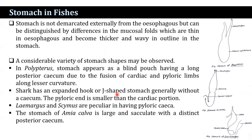In fishes, the stomach is highly varied. It is not demarcated externally from the esophagus, but can be distinguished by differences in the mucous folds, which are thin in the esophagus but become thicker and wavy in the stomach. In Polypterus, the stomach appears as a blind pouch with a long posterior cecum due to the fusion of the cardiac and pyloric limbs along the lesser curvature. Sharks have an expanded hook-like J-shaped stomach, generally without a cecum, and the pyloric end is smaller than the cardiac portion.